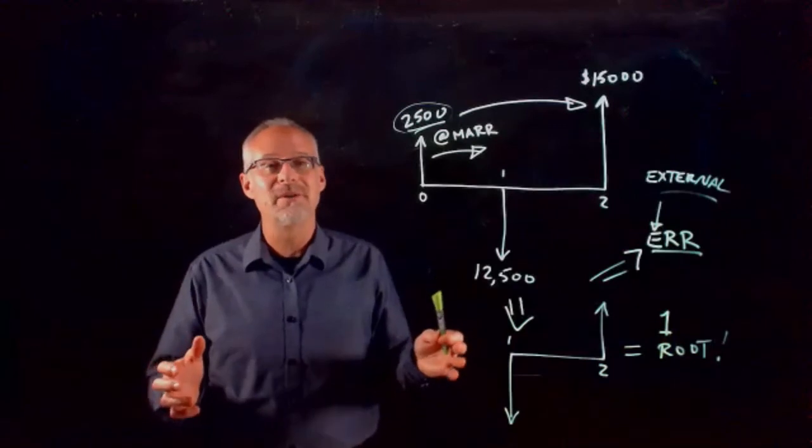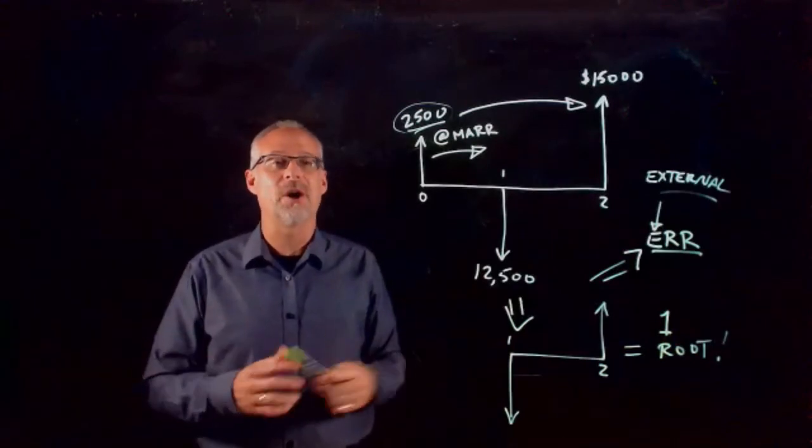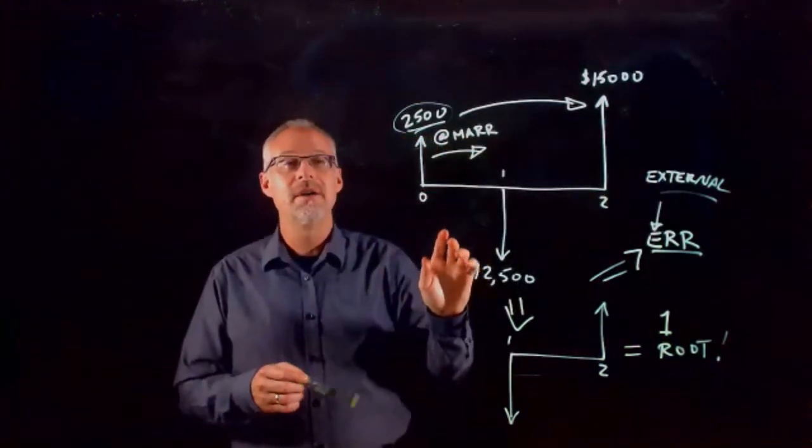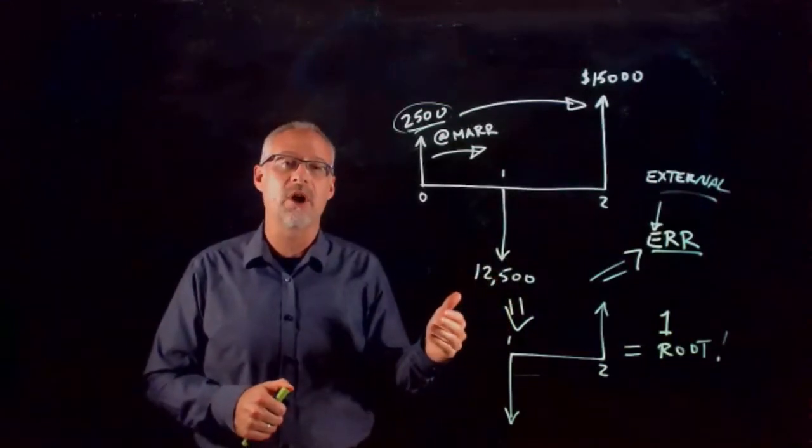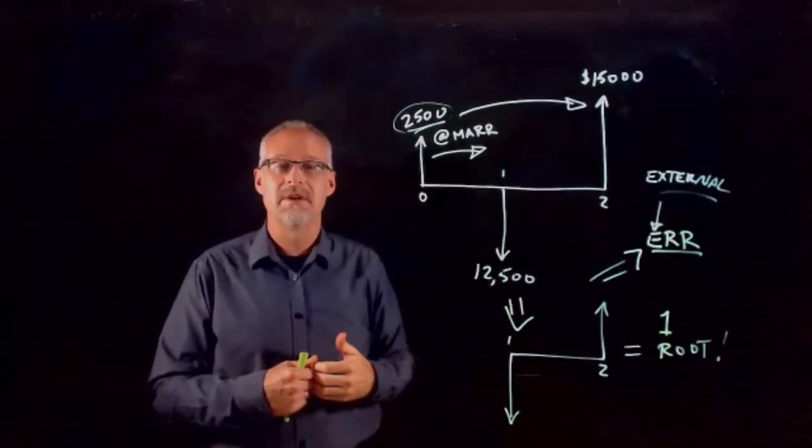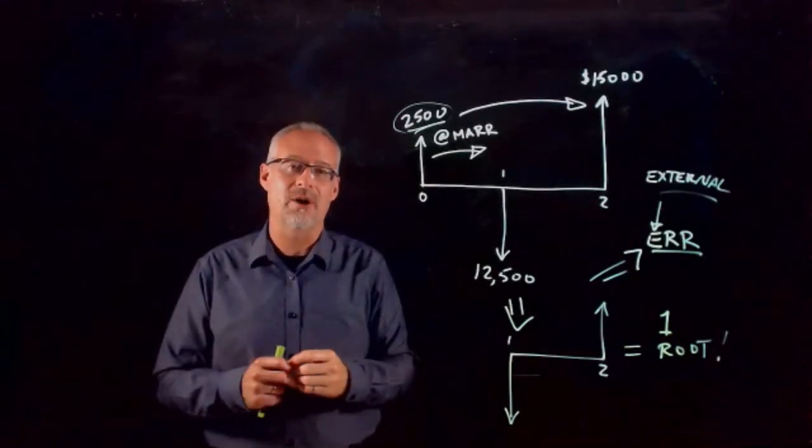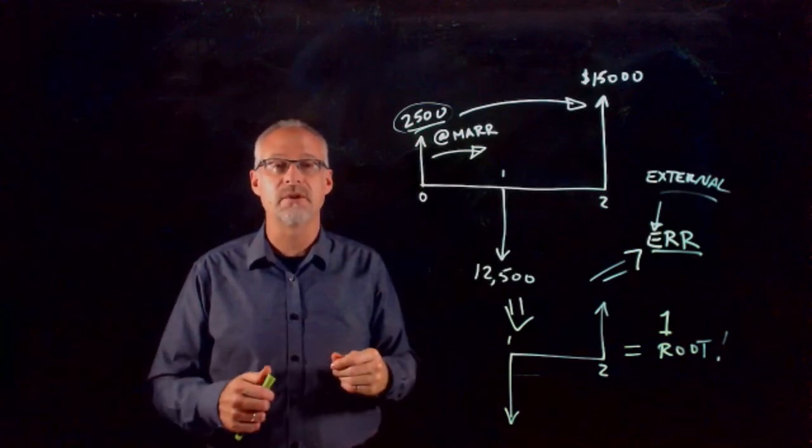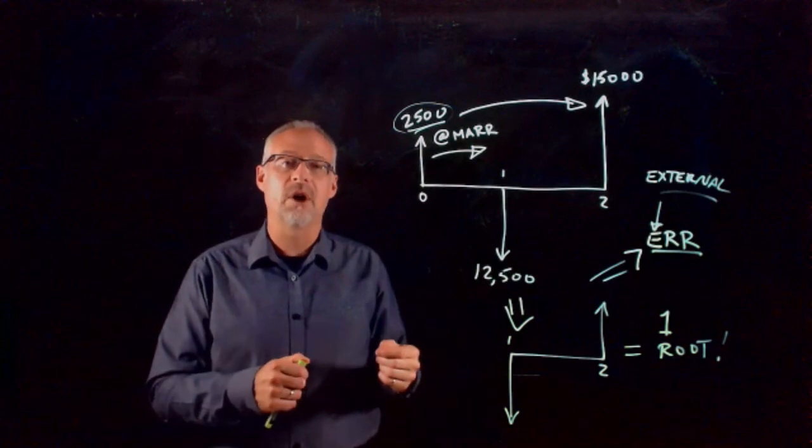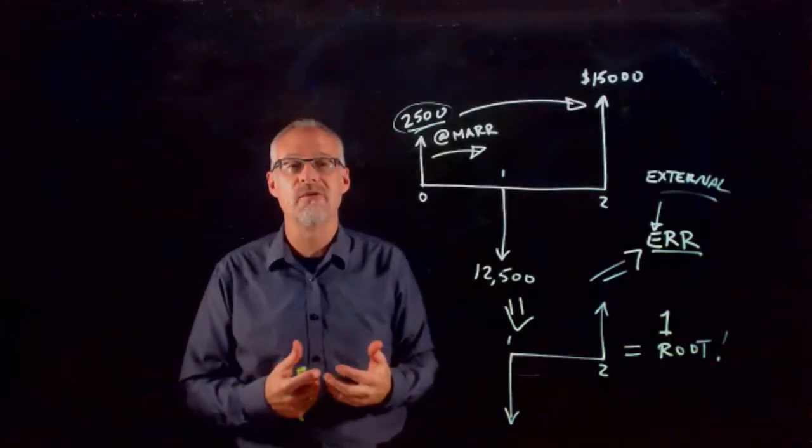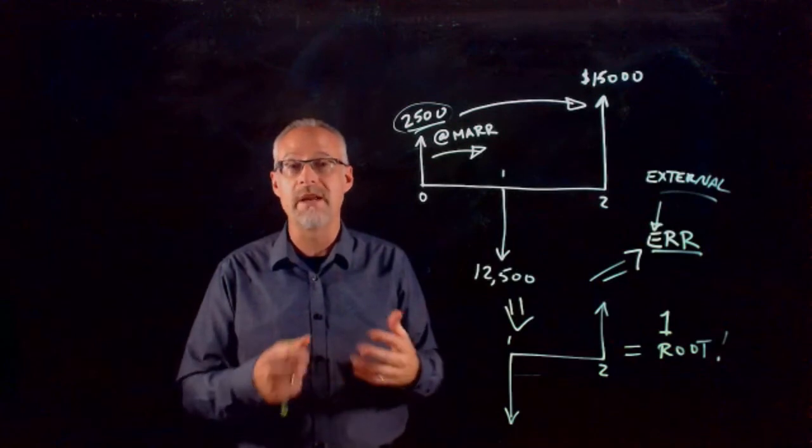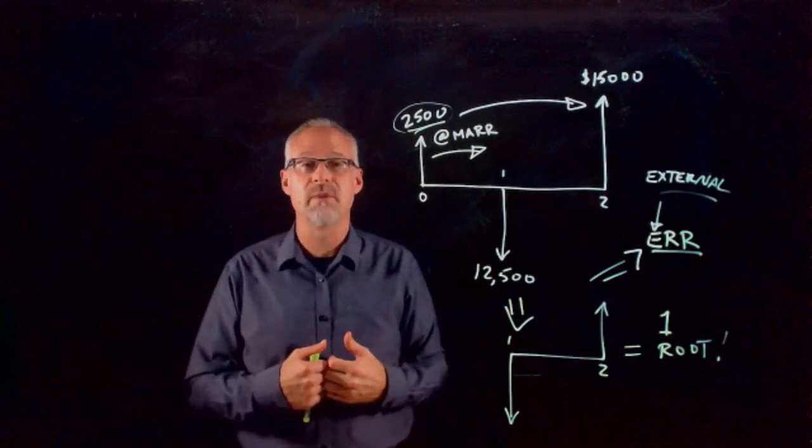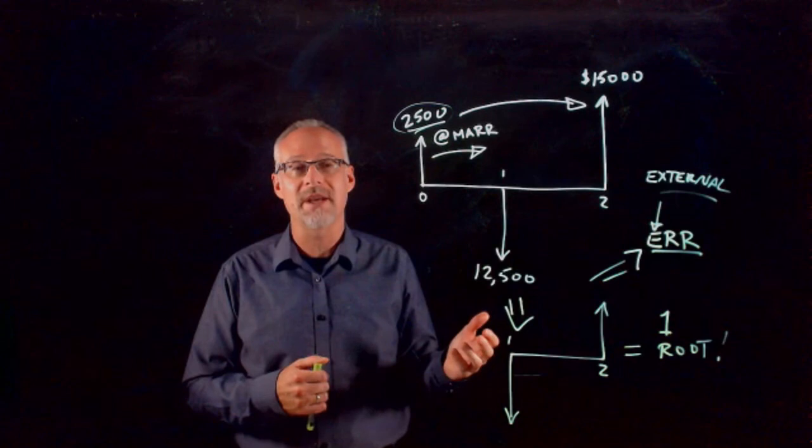What it turns out is that if we do this approximate ERR analysis, where we take all of the positive cash flows forward at the MARR, when we calculate that approximate ERR, it will always be less than the exact ERR. Meaning if we're using the approximate ERR to make decisions, the approximate ERR will always give us a conservative number for the ERR. Meaning it will always be less than the exact ERR, which is good for decision-making. And it's also good because it's an easier way to calculate.